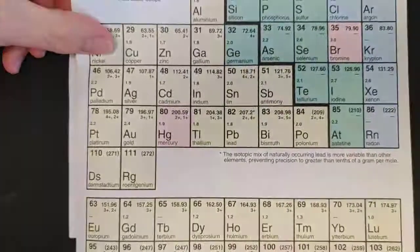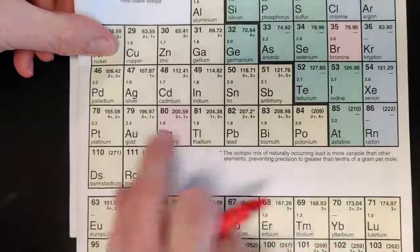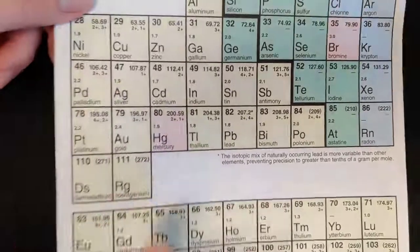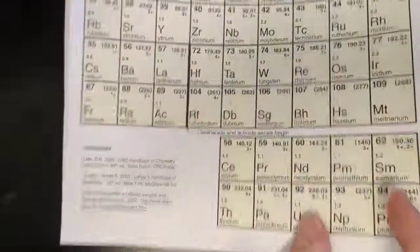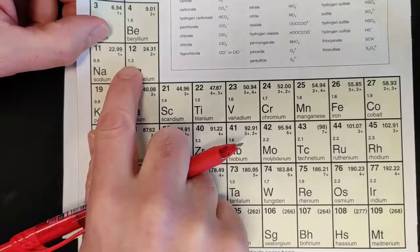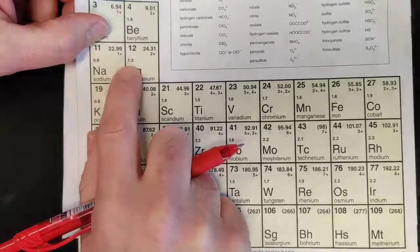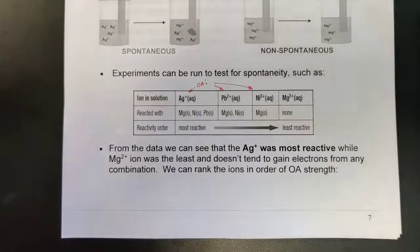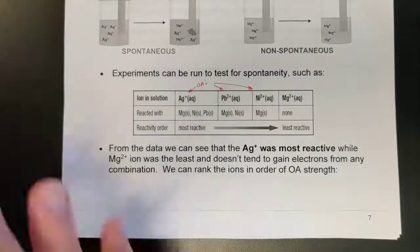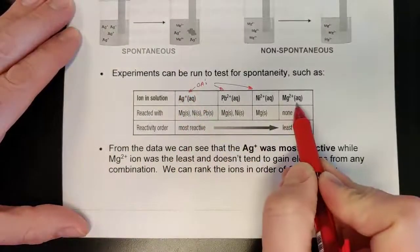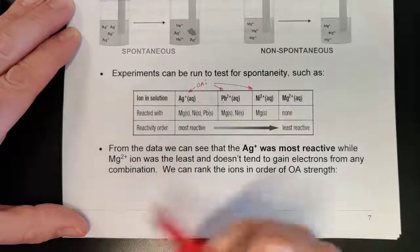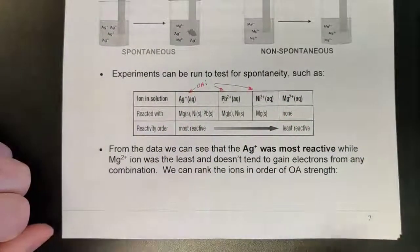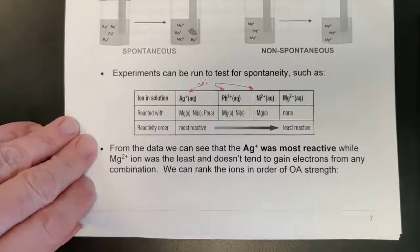Going back to Chem 20 as a callback, silver's electronegativity is 1.9, definitely bigger than magnesium at 1.3, so magnesium doesn't have as strong an ability as silver to pull electrons to itself. We want to move beyond electronegativity, but it's a nice connection. We're going to use reactivity data to figure out which species is best and which is worst. Silver ions reacted the most, magnesium ions reacted not at all, so we can rank these in order of OA strength.